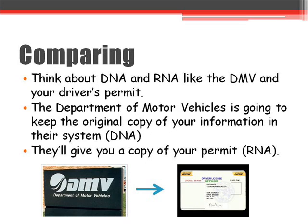I always like to compare things happening inside us to things you might actually understand. When we talk about DNA and RNA, think about getting your driver's license. Think of the DMV and your driver's permit. The DMV keeps the original copy of information — they're not going to send it with you. They keep it stored and safe so it can't be changed or damaged. What they give you is your permit — you can think of that like RNA. If it's lost or destroyed or damaged, it can be replaced.